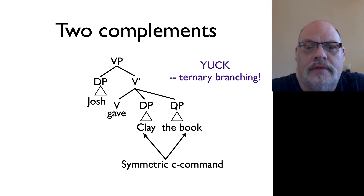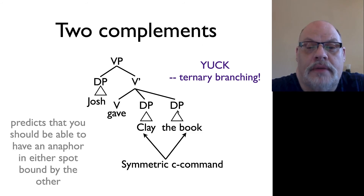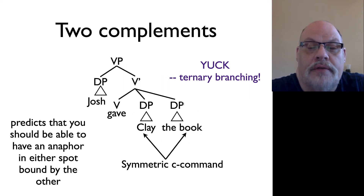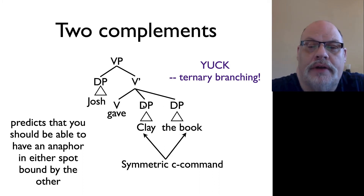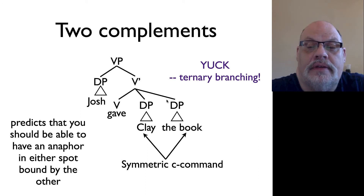We have two DPs, and let's ask whether they do, in fact, C-command each other. One phenomenon we know that makes reference to C-command is binding theory. One prediction of this particular structure is that you should be able to have an anaphor in either of these two positions bound by the other one, where the binder is C-commanding the anaphor. We should be able to put an anaphor in place of 'the book' bound by this DP, and also have an anaphor in the first position bound by the element in the second position.